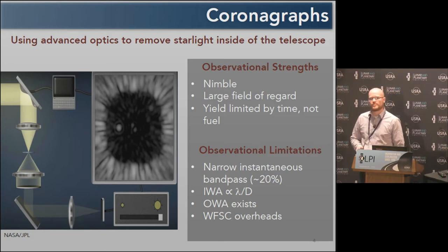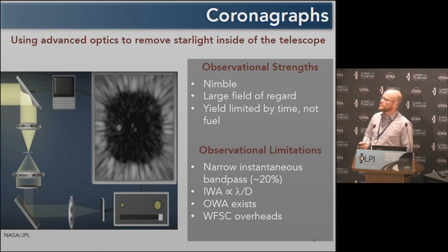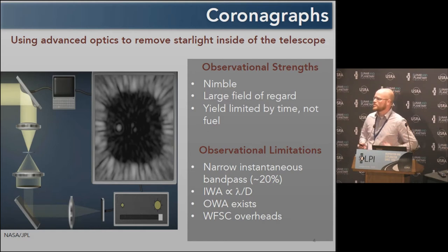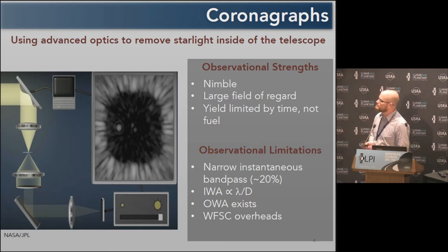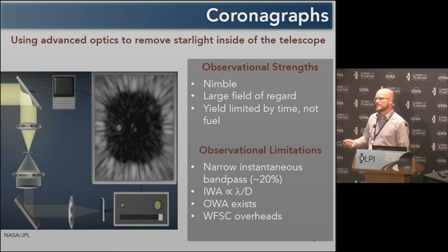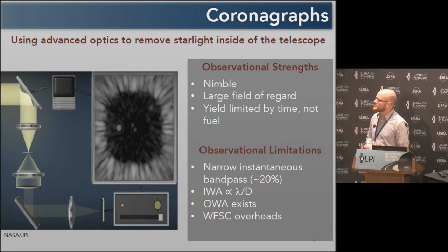If your telescope has a large field of regard, your coronagraph will also have a large field of regard. Both HabEx and LUVOIR have fields of regard that are almost the entire sky at any given point in time, which means we can really optimize the date on which we observe any system. Additionally, the yield is limited by time, not fuel. So if your nominal mission has two years of exoplanet time and gets extended, you'd be able to continue taking science — whereas with a starshade, you'd have to actually refuel and service it.